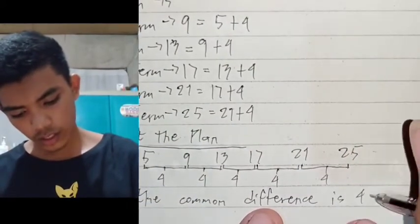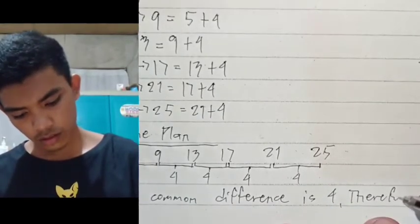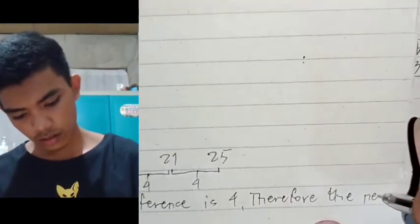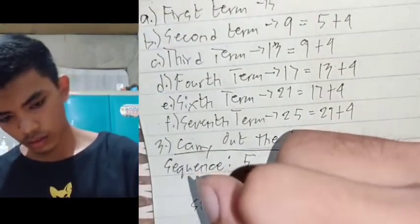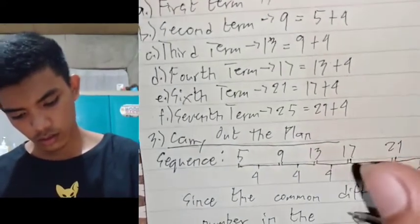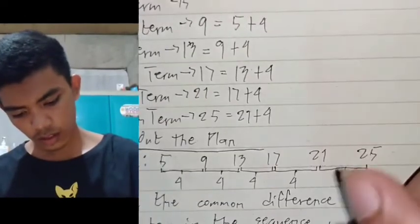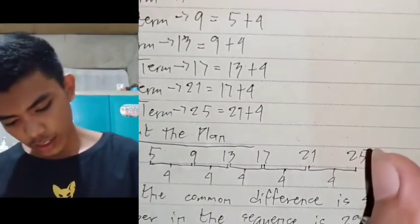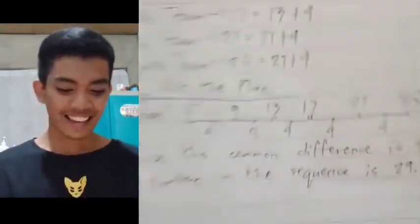We can conclude what is the last and corresponding term. Therefore, we can conclude that since the common difference is 4, the next number in the sequence is 29.